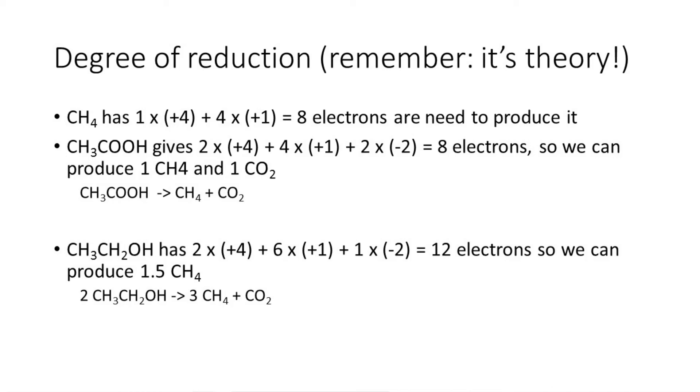Let's look at ethanol. It's a more reduced molecule, that's why it's a fuel. Ethanol, 2 carbons, 2 times plus 4, 6 protons, 6 times plus 1, and only 1 oxygen, 1 times minus 2, 12 electrons. So now we have 12 electrons. You need 8 electrons to make a methane. So we can make 1 and a half methane per mole of ethanol. So if you put it in a nice stoichiometry, you'll say we'd convert 2 ethanol into 3 methanes and CO2.